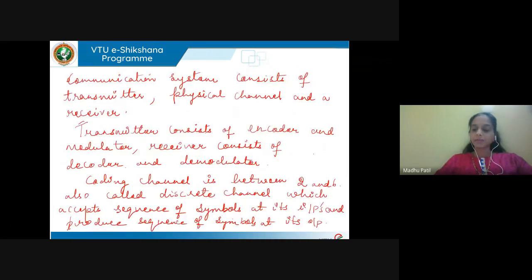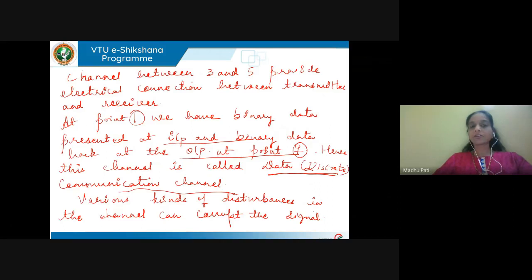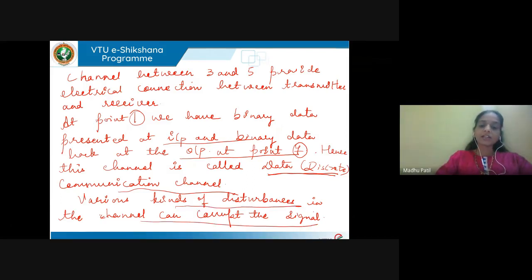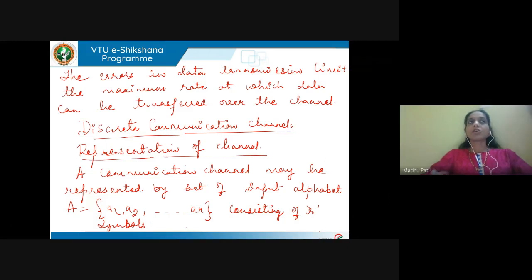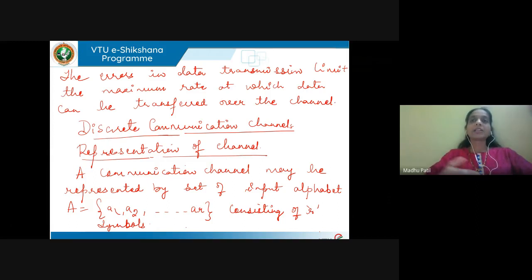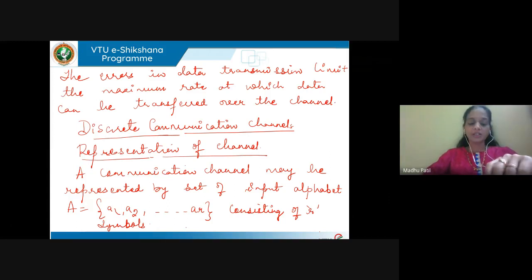When we talk about the transmission medium, it is the medium through which signals are transmitted. Whatever is transmitted at the transmitter is usually not received exactly the same at the receiver, due to various kinds of disturbances the channel can have. These disturbances corrupt the signal, and the errors caused in the transmission medium limit the rate at which data can be transferred. There is uncertainty at the receiver about whether the correct signal will be received, due to the errors introduced by channel disturbances.